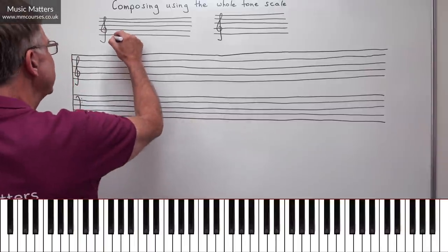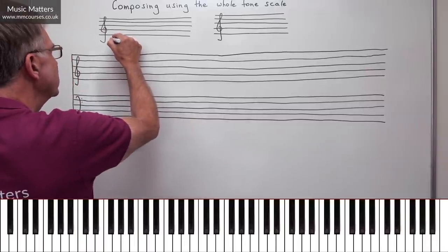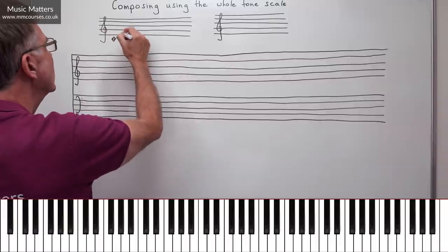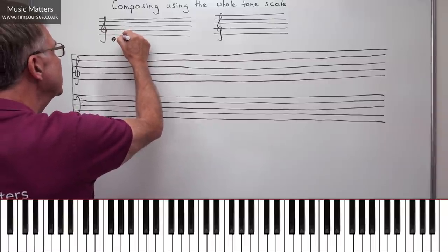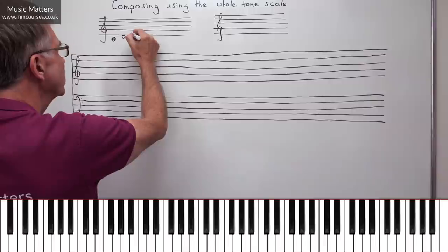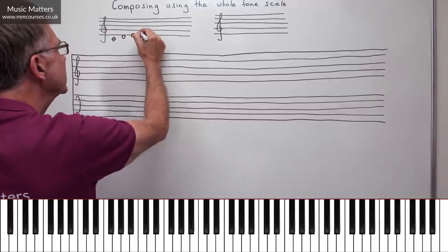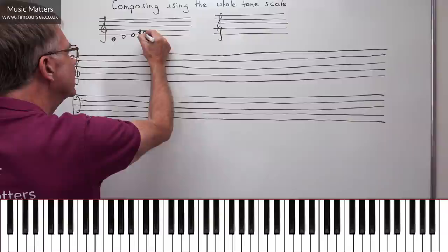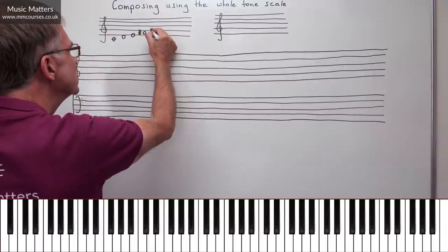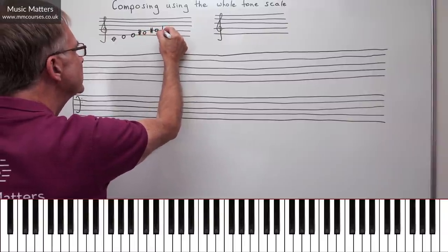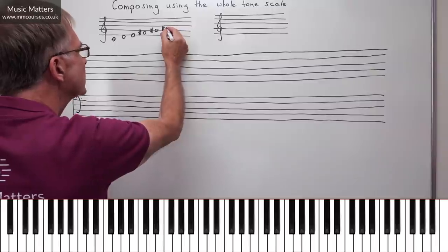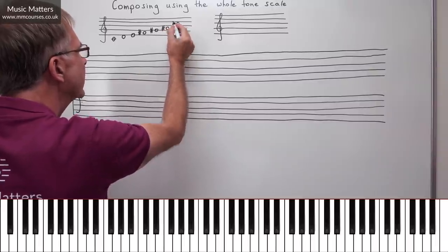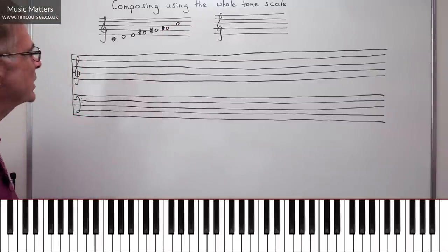So let's first of all be entirely clear what we're talking about when we talk about the whole tone scale. If I start a scale on C and I progress up in whole tones, well, a tone above C is D. Go up another tone, E. Go up another tone, F-sharp. Up another tone, G-sharp. Up another tone, A-sharp. Up another tone, I come back to C. So there is a whole tone scale.